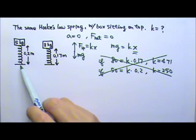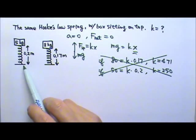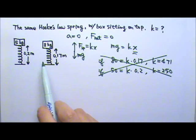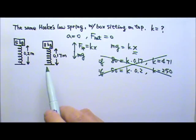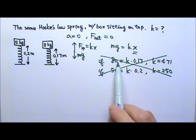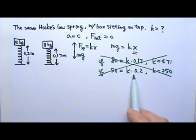Because we don't know the original length of the spring, it's not obvious how much the compression is for each case. But we can say the original length is L, and then we can write out two equations using L-0.17 and L-0.2 for the compressed amount. We have two equations with two unknowns, k and L, and we'll be able to solve for both.